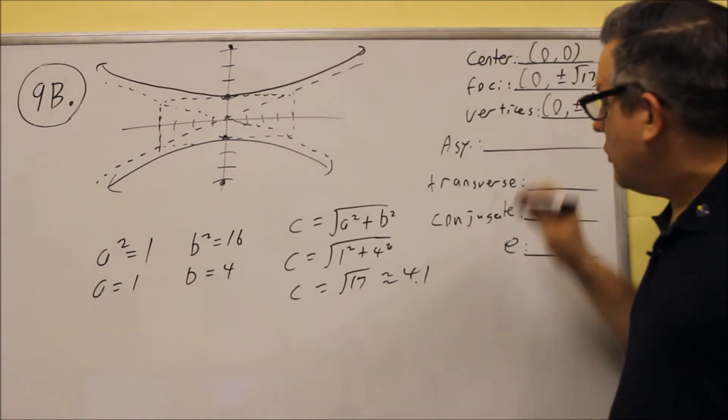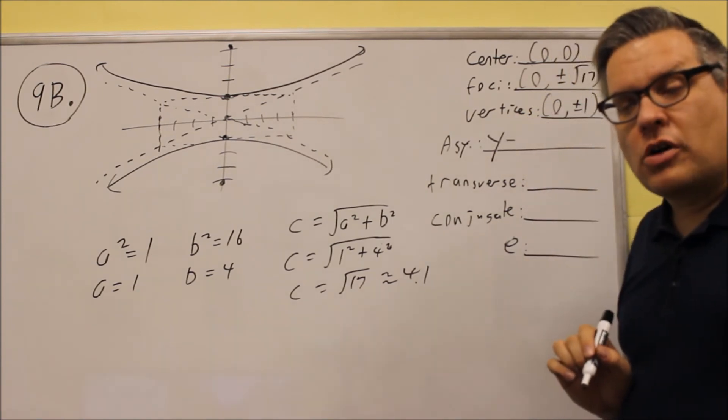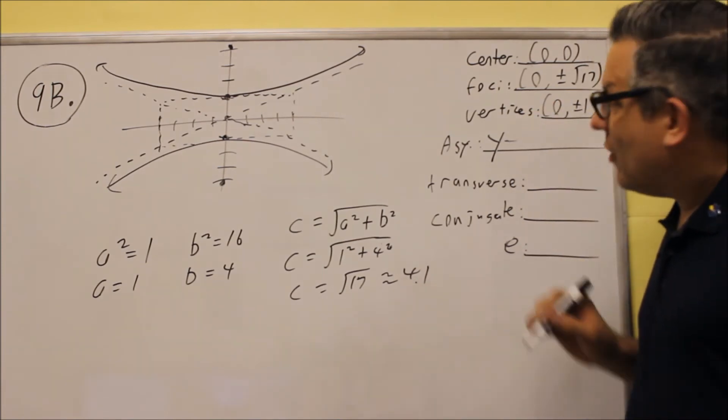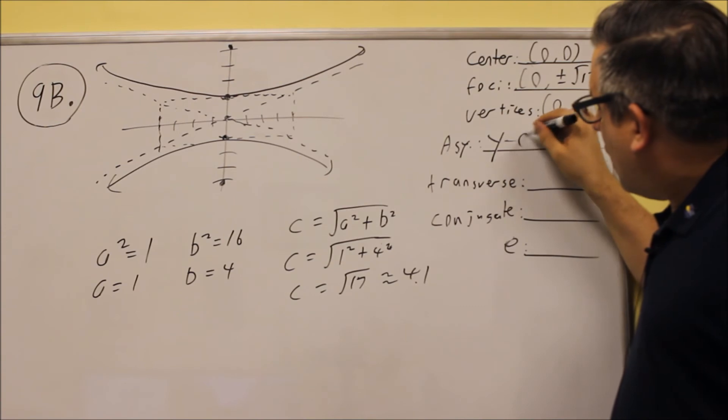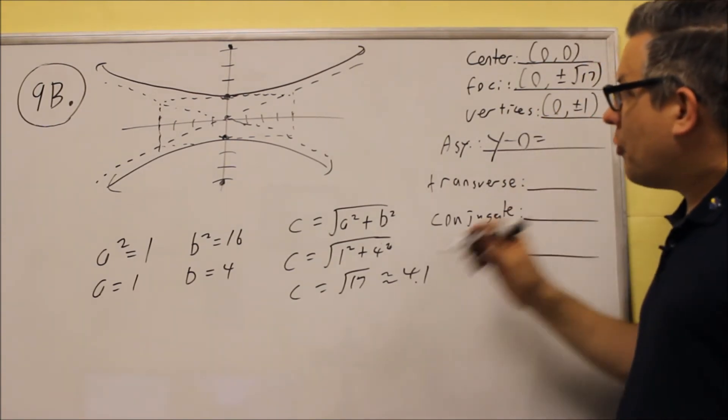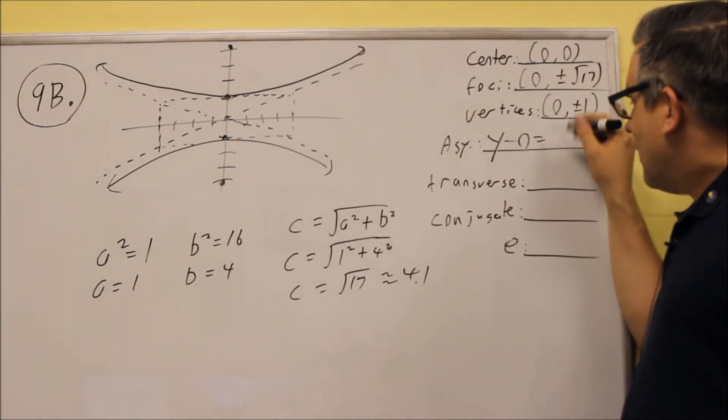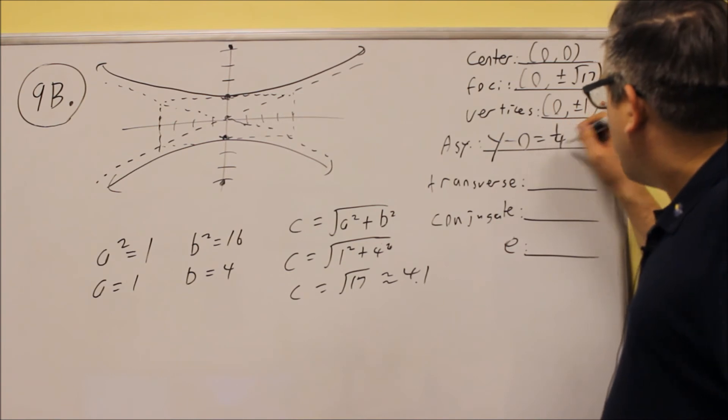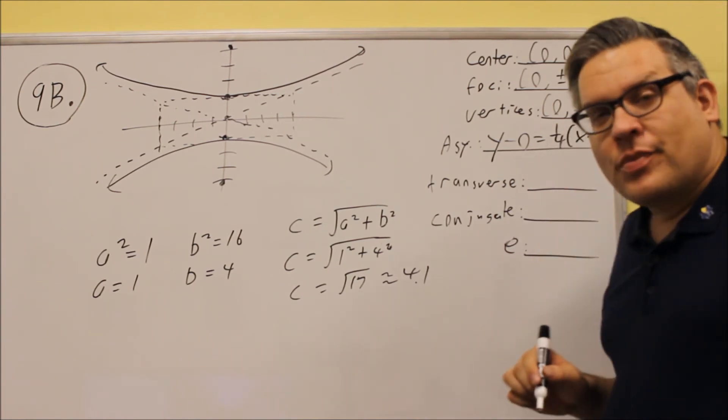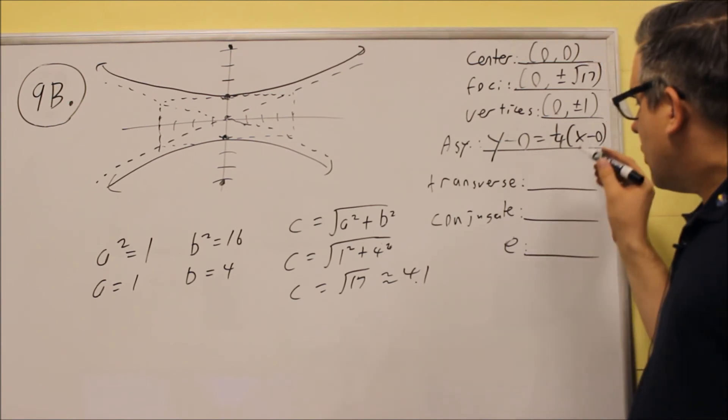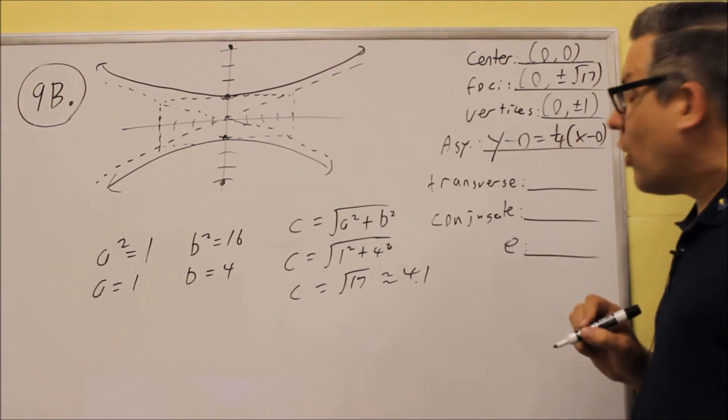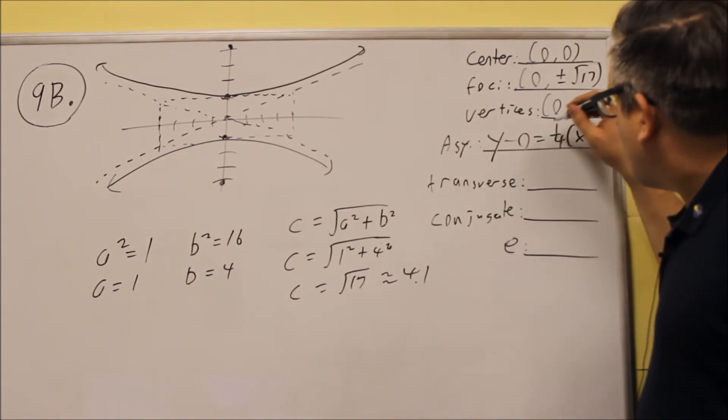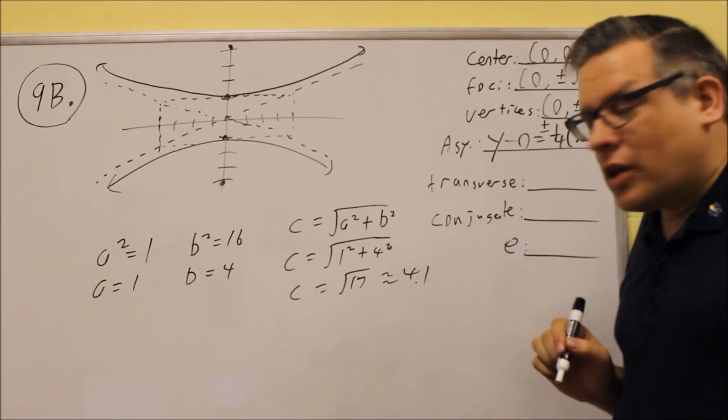Now, we're going to do the asymptotes. So, asymptotes are the point slope form. We have a y minus 0 is going to equal, now the formula, if it opens up and down, the slope value you're going to put there is going to be a over b. So, in this case, it's going to be a over b is 1 fourth. Then you do x minus the y coordinate of your center, which is 0. You can leave your answer like that, or if you wanted to simplify it to y equals 1 quarter x, that's okay as well. And so, this has got to have a plus or minus in front of it.